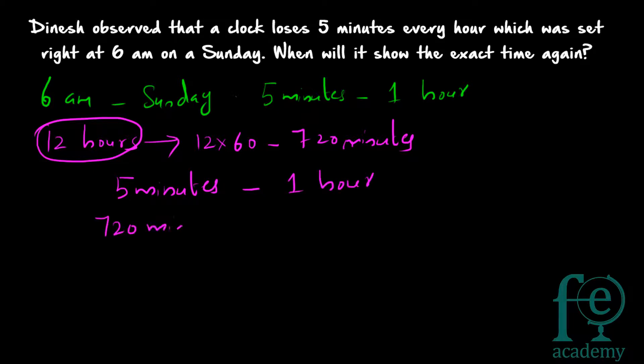So, for losing 720 minutes, how many hours will be taken? 5 times 144 will be giving you 720 or 720 divided by 5 is equal to 144.